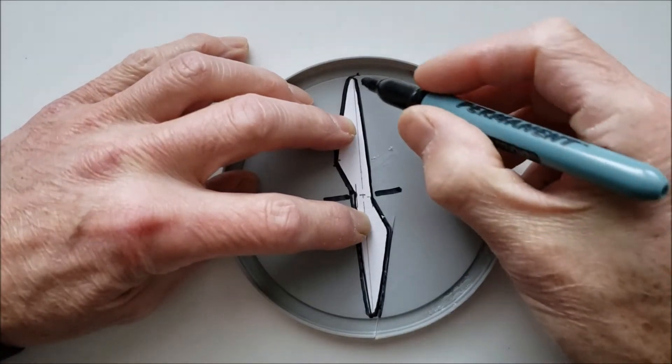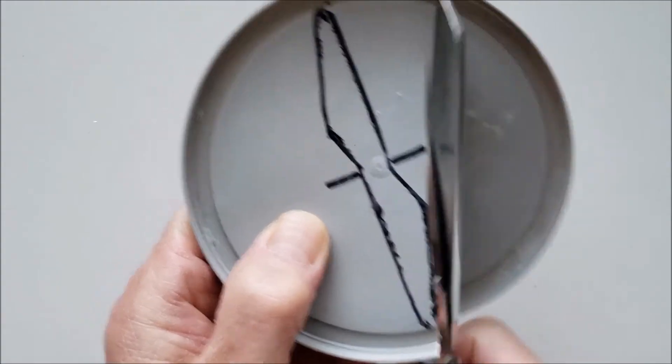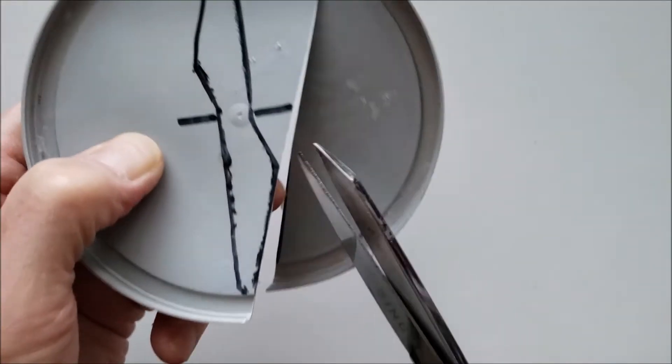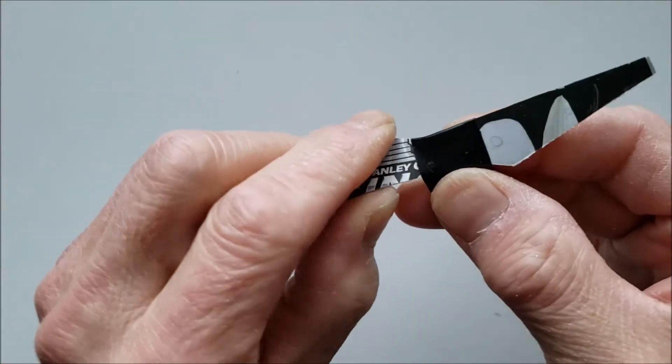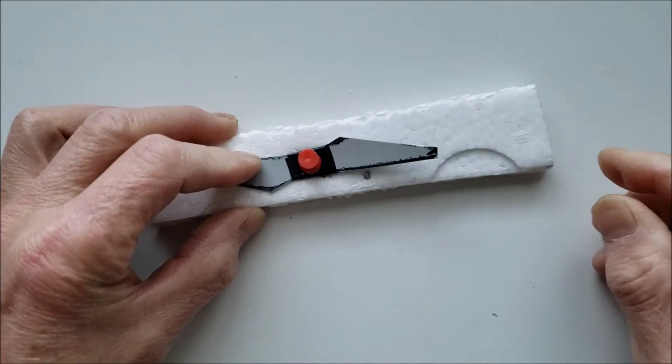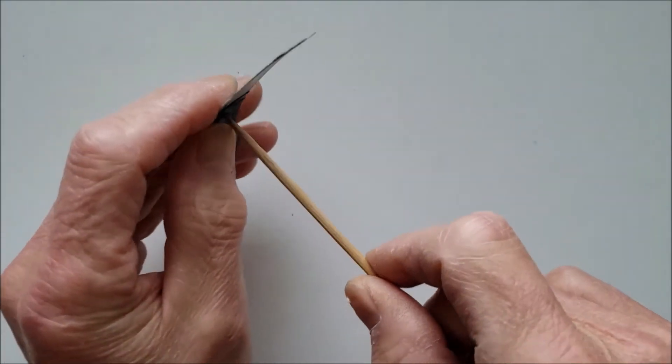To make the propeller, draw a cardboard template and copy it onto a piece of thick plastic, then cut it out. Reinforce the center with electrical tape and punch a hole for the shaft with a thumbtack, then enlarge it using a skewer stick.